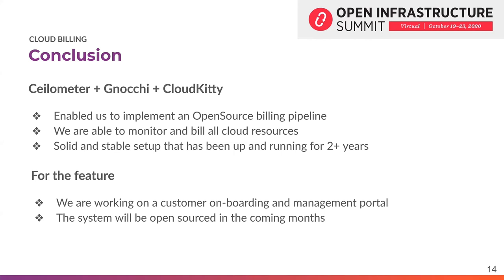In Gnocchi, some of the pull requests were merged and some are still open. We know that Gnocchi is in a gray area right now — it's not part of OpenStack — but there is a movement to bring this type of system back to the community. When we fixed those limitations, we proposed the fixes back to the Gnocchi project on GitHub. In CloudKitty, there is one extra merge request still open, but it's coming probably in the Wallaby release.